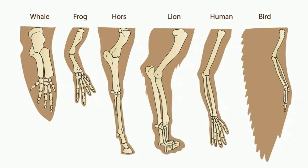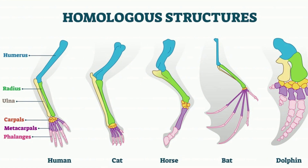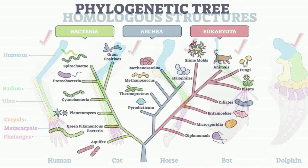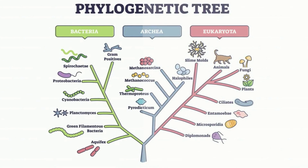Homologous structures can be used to infer evolutionary relationships among organisms. Because the structures are similar across the human, cat, horse, bat, and dolphin, it is easy to infer that they all came from a common ancestor.